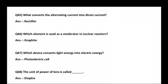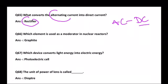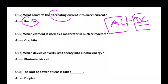First question: What converts alternating current into direct current? The answer is rectifier. A rectifier converts alternating current into direct current.